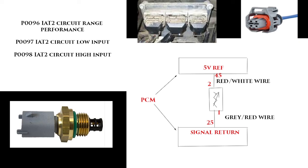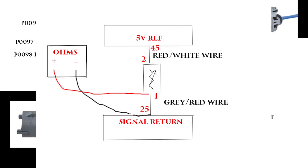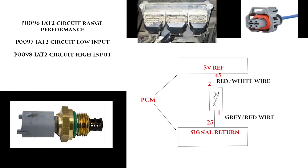We're going to move on to checking the signal return circuit for an open, testing from pin 1 to pin 25 — again, is resistance less than 5 ohms? Just like the last test, if you have over 5 ohms or excessive resistance, you probably have a broken wire. You could also take one of your leads off your connector and go to battery ground — if you're showing resistance to battery ground after having high resistance on the wire, and you have 5 ohms or less to ground, you probably have a short to ground.